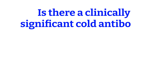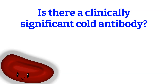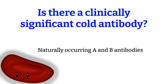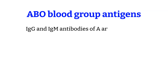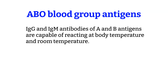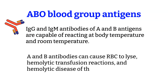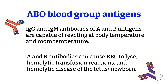There are clinically significant cold antibodies. The one you should be familiar with is the naturally occurring antibody from anti-A and anti-B. The ABO blood group has both IgG and IgM antibodies. A and B antibodies are capable of reacting at body temperature as well as room temperature. Anti-A and anti-B can cause red blood cells to lyse, and the IgG antibodies can cross the placenta, attach to fetal red blood cells, and damage or lyse them. This is why ABO antibodies are classified as clinically significant cold antibodies capable of causing hemolytic transfusion reactions and hemolytic disease of the fetus and newborn.